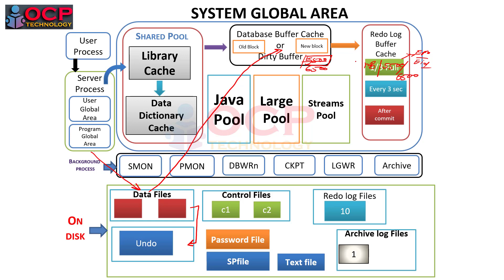After commit, the data is sent into the redo log files with the help of the log writer. Once the user commits, the log writer takes that particular entry from the redo log buffer cache and writes it into the redo log files. If your database is in archive mode, that particular entry also goes into the archive files — this part is optional.